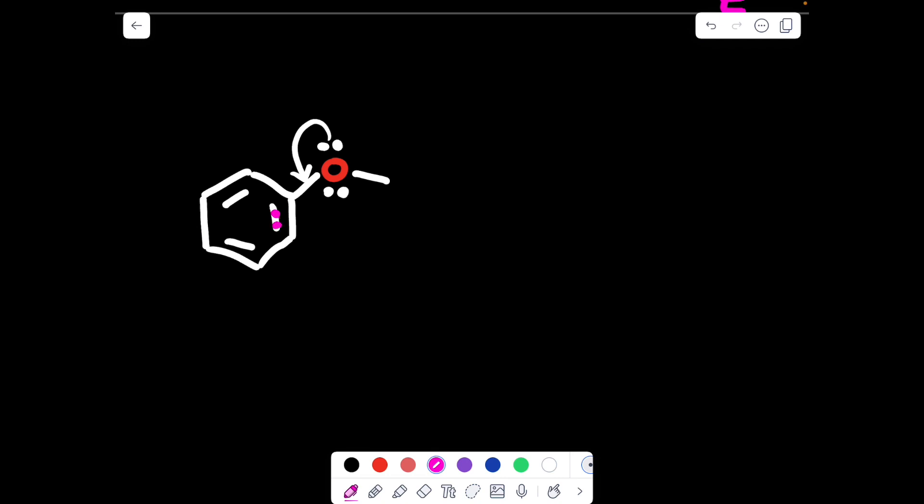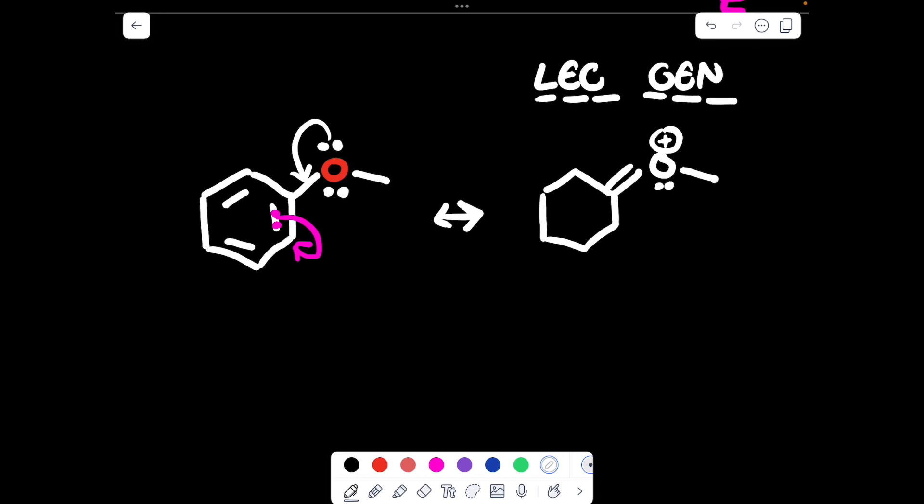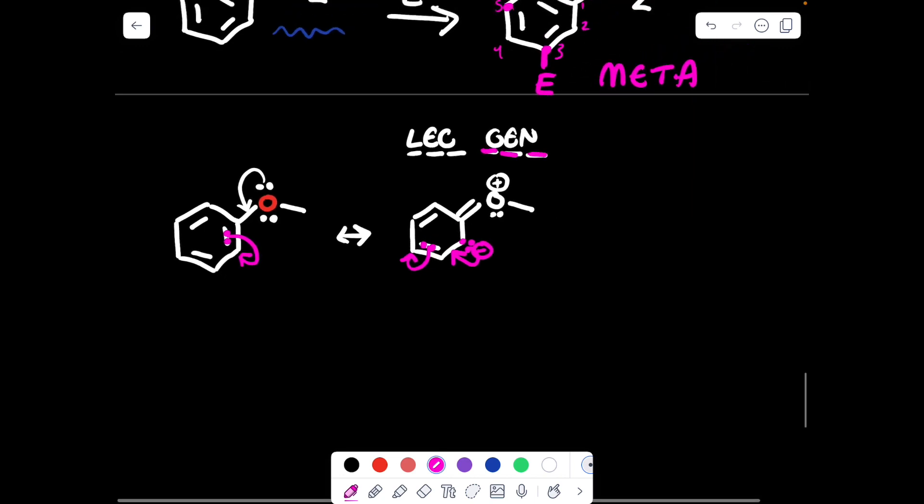I'm going to start with the lone pair on the oxygen, a part of the methoxy, and it's going to go two in, two up. We're going to stop at each intermediate resonance form. So the oxygen has lost electrons, it will become cationic, where we have lec, gen, lose electrons, become cationic, gain electrons, become negative. Two in, this carbon has gained a lone pair.